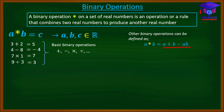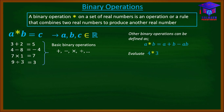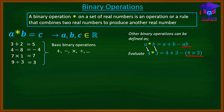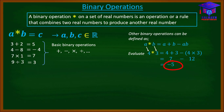All this you see over here is the definition of the operation. So you may be asked to use this definition to evaluate four star three. You relate A to four and B to three. So wherever we find A in the definition, we put four, and wherever we find B, we put three. This gives us four plus three minus four times three, which simplifies to negative five. So we have combined the two real numbers four and three with the operation star to produce another real number, negative five.